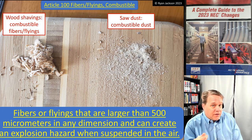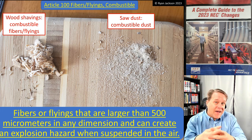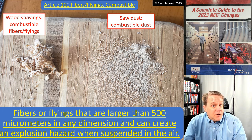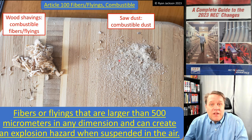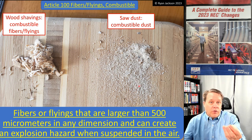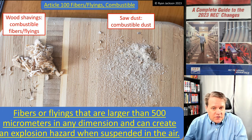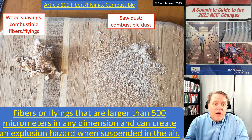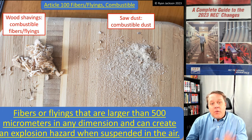If you can visualize the size of ground coffee, that is about 500 micrometers. If a material is finer than ground coffee and combustible, it is combustible dust. If it's larger than ground coffee and combustible, it's a fiber or flying. For example, sawdust on the left is combustible dust — finer than ground coffee — while wood shavings are combustible or ignitable fibers or flyings. That doesn't mean every wood shop needs Class 2 or Class 3 classification; whether there's enough to warrant area classification is discussed in Section 500.5.